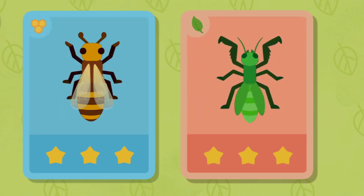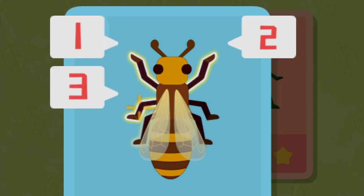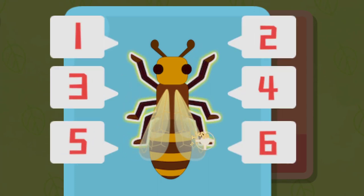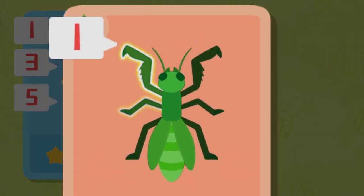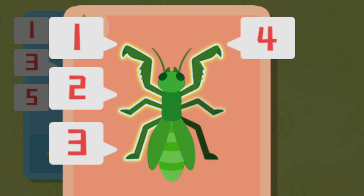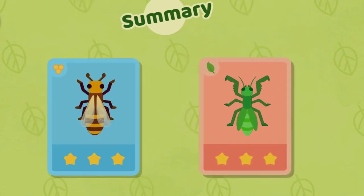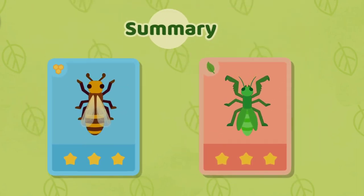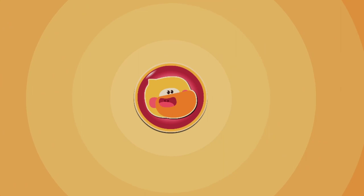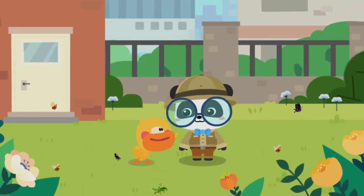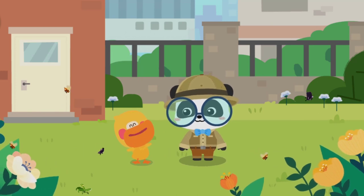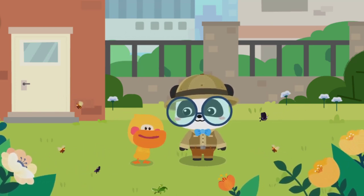Let's count how many legs they have. 1, 2, 3, 4, 5, 6. They both have six legs. Summary: an insect has two antennae on its head. An insect's body is divided into three parts — head, thorax, and abdomen. An insect normally has six legs. An insect has two antennae and six legs, with its body divided into three parts of head, thorax, and abdomen.